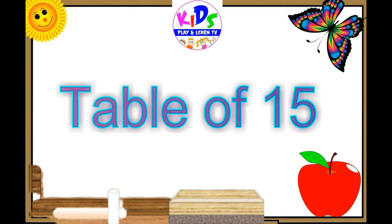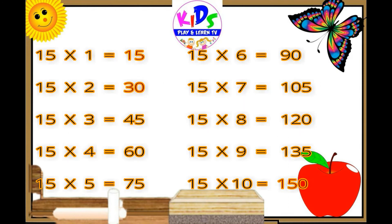Hey kids, let's repeat. 15 1's are 15, 15 2's are 30, 15 3's are 45, 15 4's are 60, 15 5's are 75, 15 6's are 90, 15 7's are 105, 15 8's are 120, 15 9's are 135, 15 tens are 150.